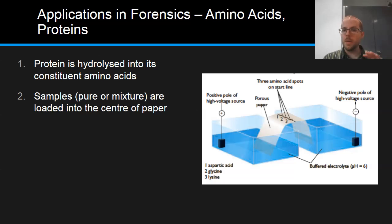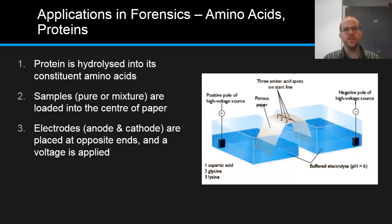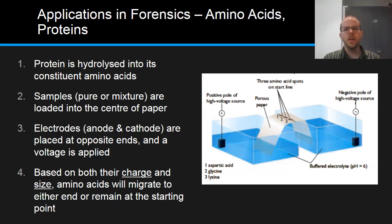We then take our samples, which may be pure samples of particular amino acids or the mixtures that we're testing, and they're loaded into the center of the paper, which is one of the key features of this technique. The two different electrodes, the anode and the cathode, are placed at opposite ends of the container, and then the voltage is applied from a power source like a 9-volt battery or a power pack. Based on both their charge and their size, amino acids will migrate either to one end or the other, or also they can remain at the starting point.